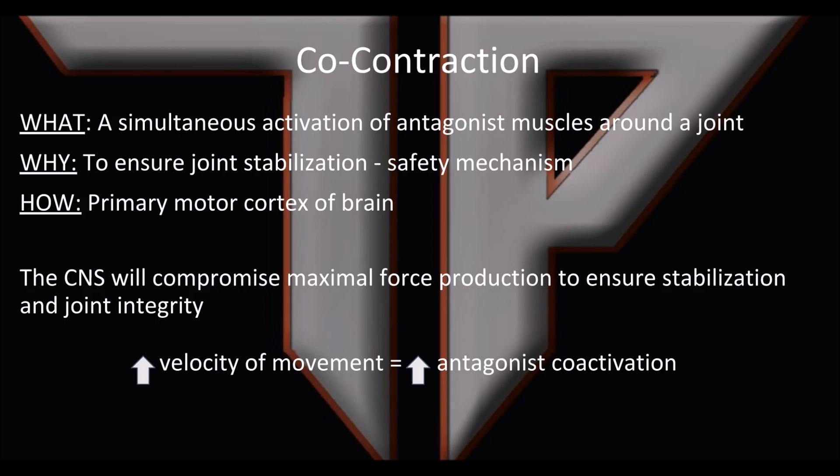For example, when you go to change direction with your leg, your quad and hamstring both have tension. This is always the case at some level, and there are large interactions between those two muscles at all times — when something happens to one, the other relaxes or activates. We have co-contraction to ensure joint stabilization as a safety mechanism.